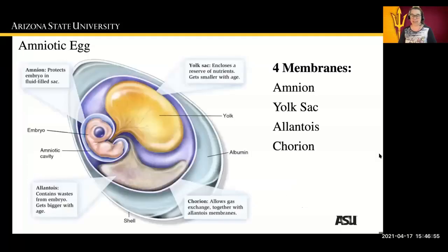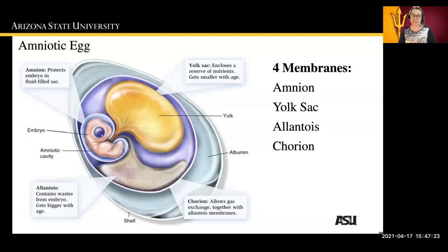This is an amniotic egg, which differentiates other organisms from amniotes. The amniotic egg has some significant evolutionary adaptations to help keep it living over time, away from an aquatic environment. The amniotic egg has an amnion, which protects the embryo — it's a fluid-filled sac that the embryo is found within. The amniotic cavity surrounds the embryo and holds the fluid. The allantoid contains waste from the embryo and gets bigger as the embryo gets older.